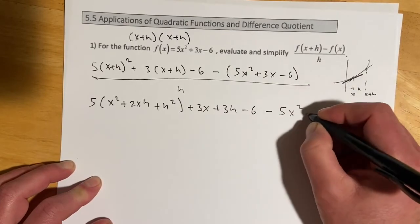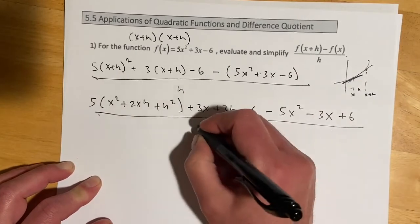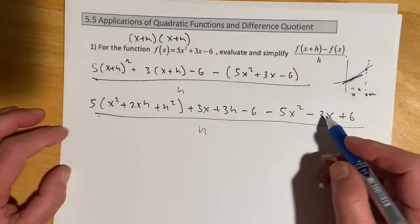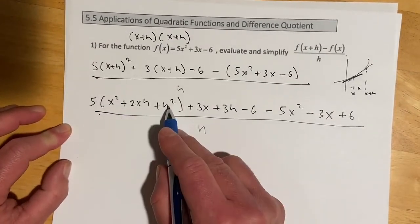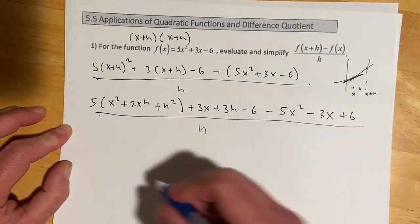Distribute that sign through. Minus 5x squared minus 3x plus 6. All of that is over h. My pen might be dying. Let's go look at this one. And then we'll distribute the 5 through. And then I'm just going to rewrite all this stuff. And so I'll cut away and come back.